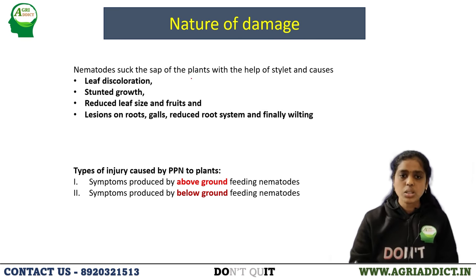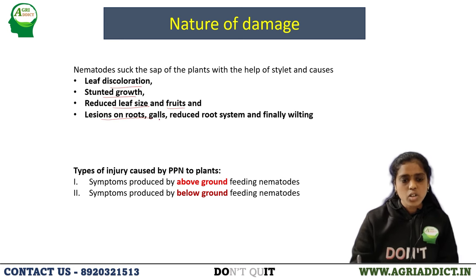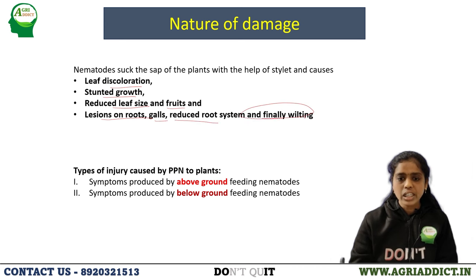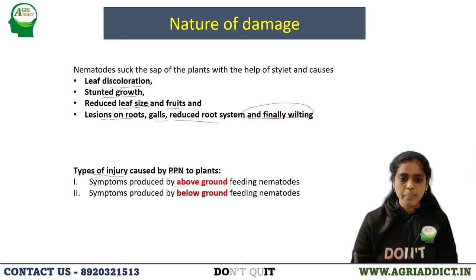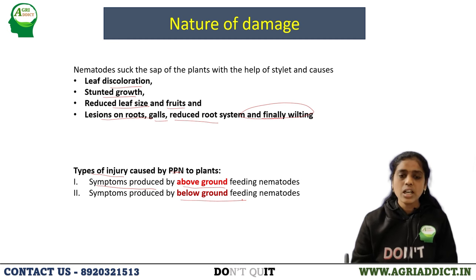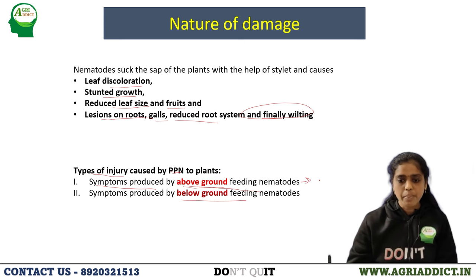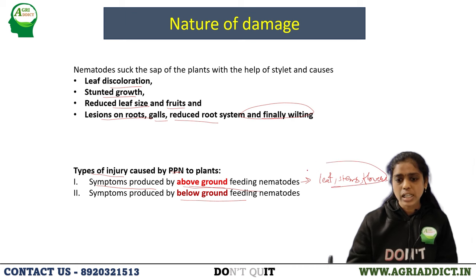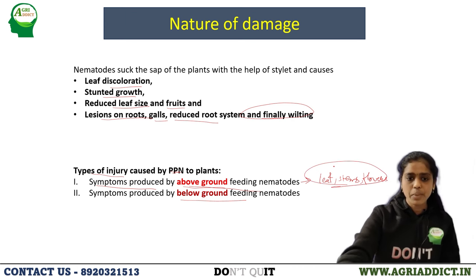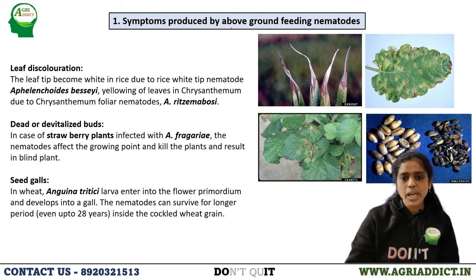Some common symptoms caused by nematodes include leaf discoloration, stunted growth, reduced leaf size and fruits, lesions on roots, galls, reduced root system, and ultimately wilting. There are two major types based on location: symptoms produced by above-ground feeding nematodes and below-ground feeding nematodes. Above-ground feeding nematodes mainly attack plant parts like leaf, stem, and flowers.